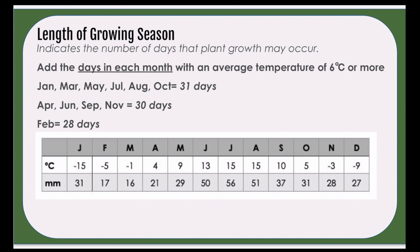For length of growing season, we're looking at months where there is an average temperature of six degrees Celsius or more. The reason we pick six degrees is because this is where the ground is more readily able to grow plant matter and have more success with growth. The months we will be looking at are May, June, July, August, and September — those are the months where we have a temperature of six degrees Celsius or more.